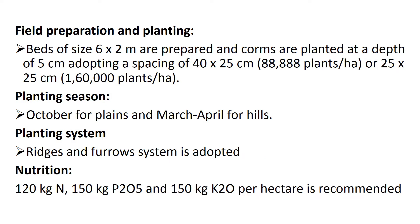For field preparation and planting, first prepare a bed of 6 x 2 meters. Corms are planted at a depth of 5 cm with spacing varying from 14 x 25 cm to 25 x 25 cm. Many times bed size comes in exams — don't confuse this bed size with the nursery bed. The ideal nursery bed is around 3 to 5 meters in length and 1 meter in width, raised 15 to 20 cm above normal ground, with a space of 30 to 40 cm left between two beds. The nursery bed size is 3–5 x 1, but here the field bed size is 6 x 2.